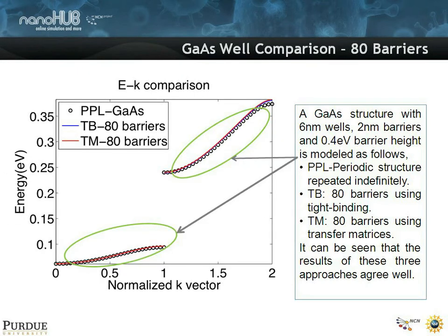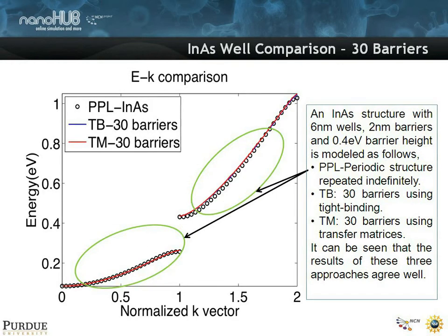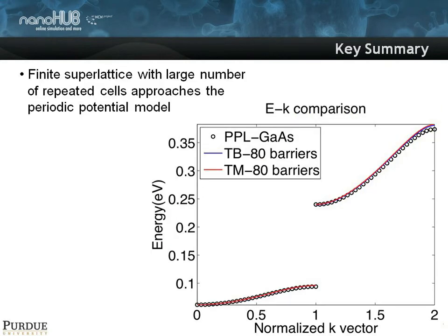There are some numerical differences, but in principle the result is the same. If you increase to 80 barriers from 30, all you do is literally fill in more k-points in your discrete space. If you make the dispersion different, like an indium arsenide structure where the mass of the material is lighter, and you start with 30 barriers, you have fewer points at first, but the dispersion is the same. With 80 barriers, you just fill it in. The key summary is that a finite superlattice with a large number of repeated cells approaches that of a periodic potential model.